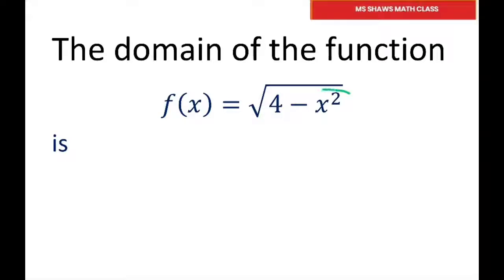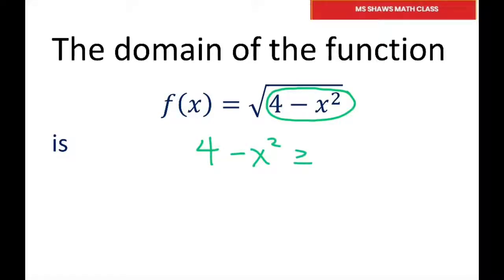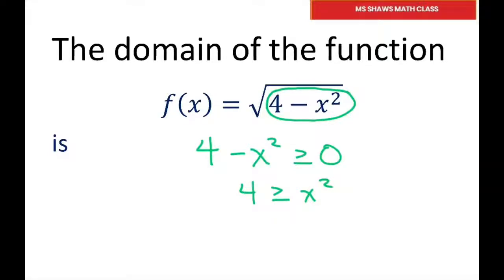So it can be 0, but it just can't be negative. So we're going to take this expression, 4 minus x squared, and see what would make it positive or equal to 0. So I'm going to add x squared to both sides. And then when I take the square root...